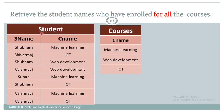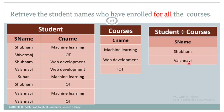Let us consider two relations — student and course. In the student relation, we have student names and course names representing enrollment. These are the list of courses offered. Now, Shubham has enrolled for machine learning, web development, and IoT — he has enrolled for all. Vaishnavi has enrolled for web development, machine learning, and IoT. The result of the division operation gives Shubham and Vaishnavi. It doesn't include Shubham's peer who enrolled only for IoT, or Suhan who enrolled only for machine learning.